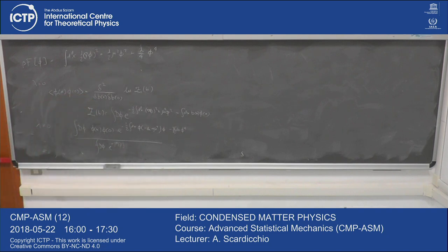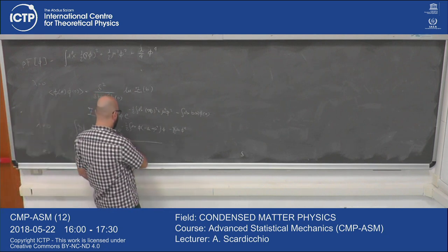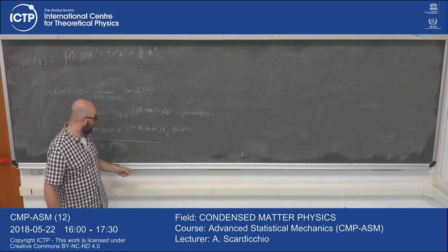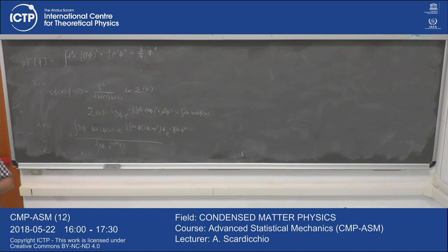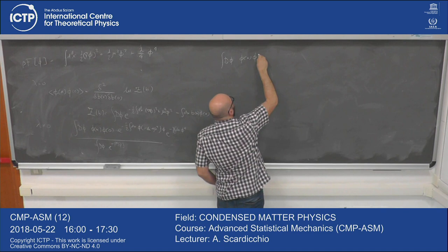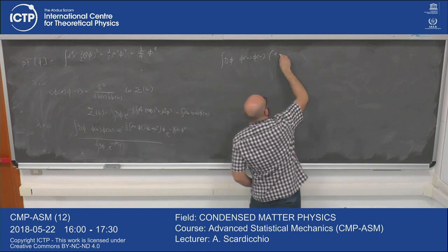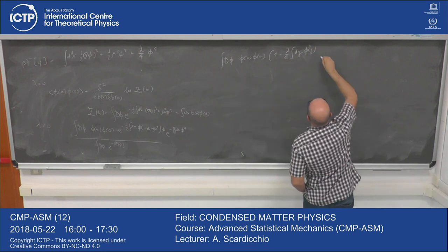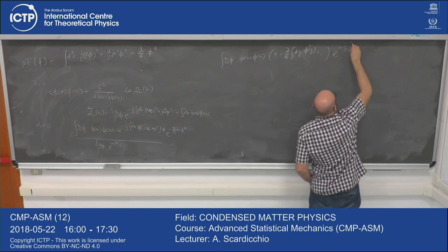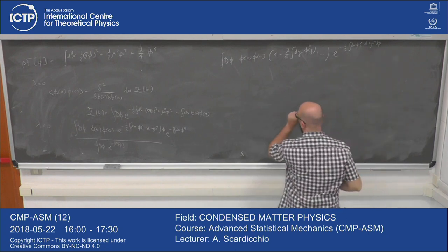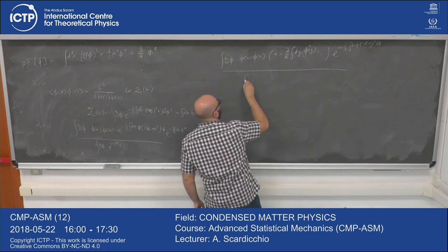We can think of doing perturbation theory. The idea is that we write this exponential as the product of two exponents, and we expand this in powers of lambda. We also have to expand the denominator in powers of lambda. So we have phi x, phi 0, and then we expand this exponential to first order: 1 minus lambda over 4, integral dy, phi y to the fourth, plus higher order terms, times e to the minus one half integral dx of phi times minus delta plus mu squared times phi, divided by the same thing without the interaction.